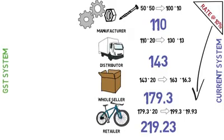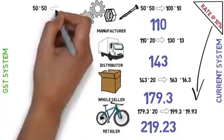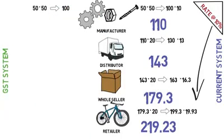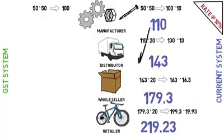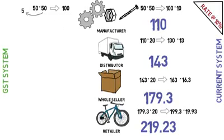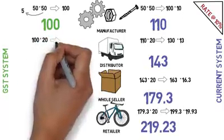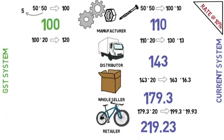So the final consumer price is Rs.219.23. This is how the current taxation system works in India. Now we will take the same example in the GST system. Raw material of Rs.50 and manufacturing value of Rs.50 make the product Rs.100. But this time the manufacturer has to pay taxes only on the value added by him, which is Rs.50. So he pays 10% of Rs.50, which is Rs.5, as tax from his profit. The selling price will not increase, and the cost of the product for the distributor is Rs.100 only. The distributor adds Rs.20 profit and the product becomes Rs.120.